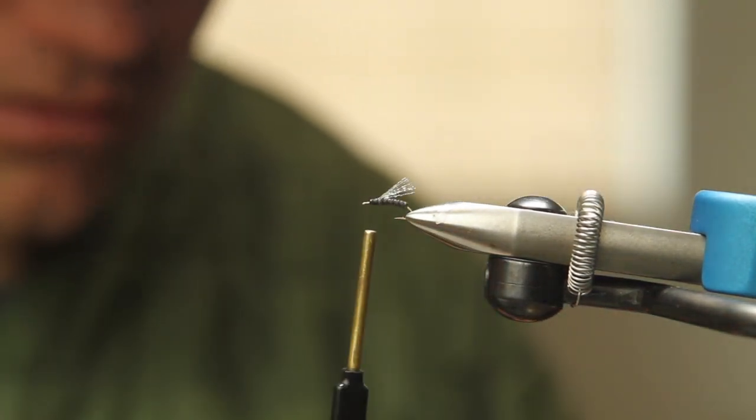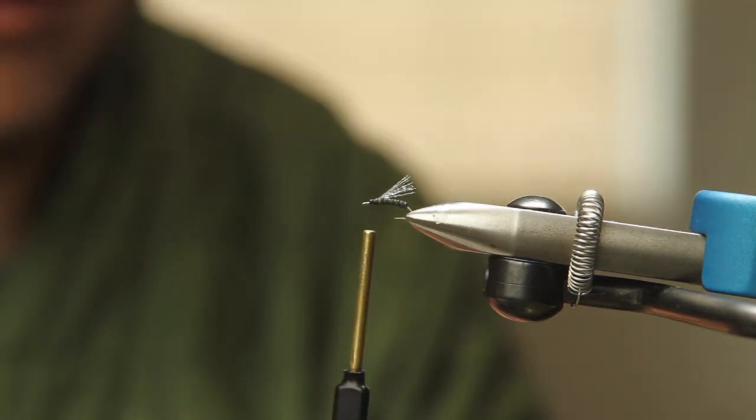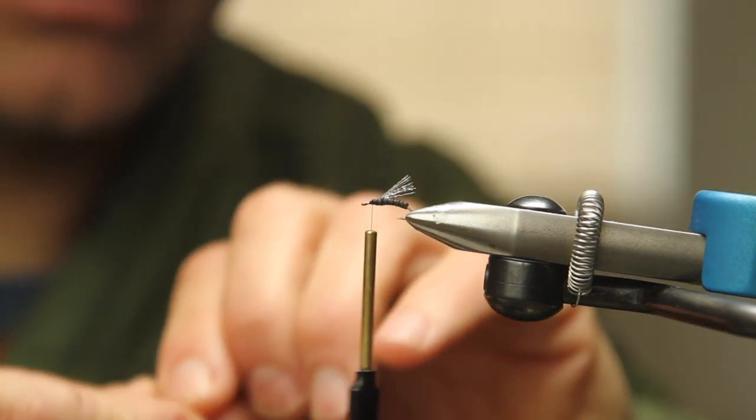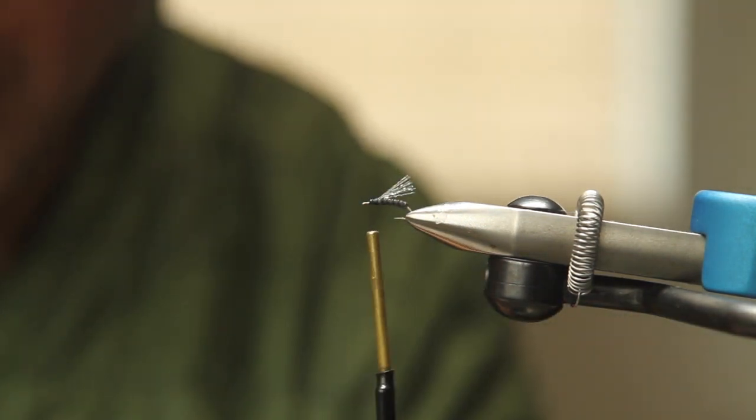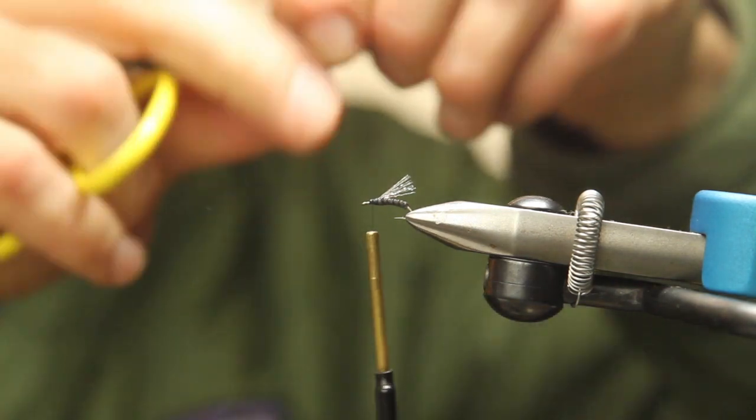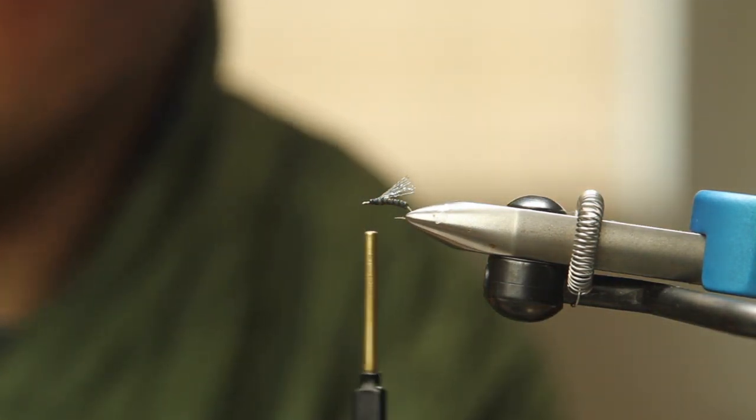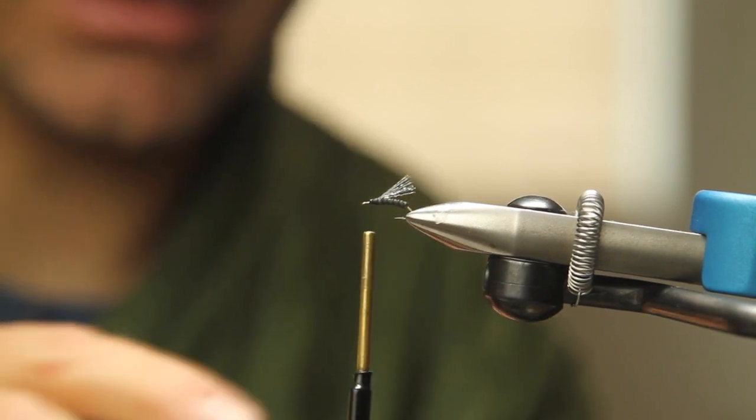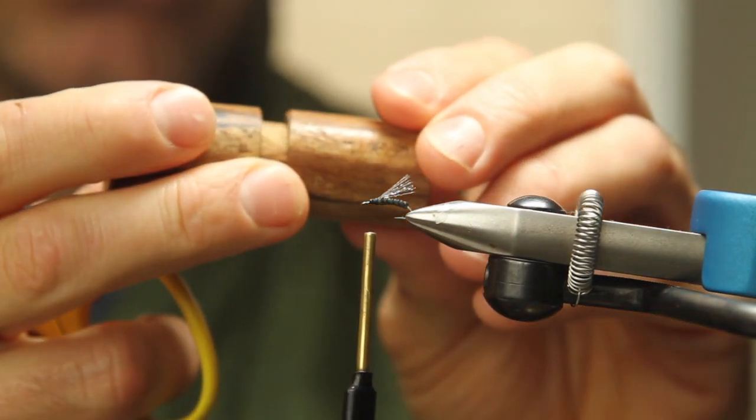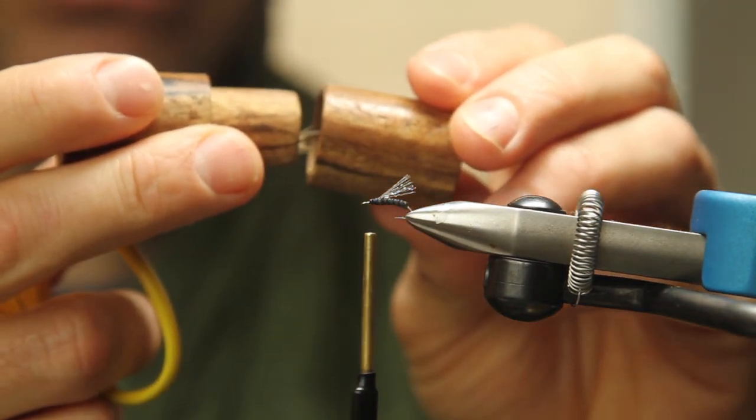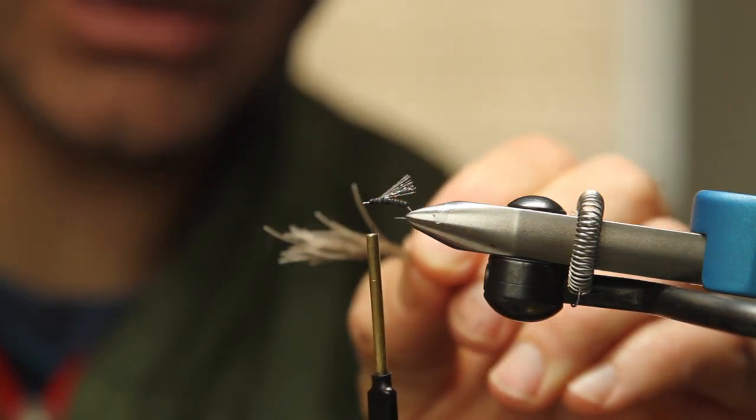Now we're going to take some elk hair. And we don't need a ton. This is a foam bodied fly. Just enough. Get a guesstimation. Kind of clean out some under fur there. Drop it into our stacker. Stack it. Pull your stacker apart. That one wasn't perfect. Got a stray in there. Pull your stacker apart. Take your elk hair out.